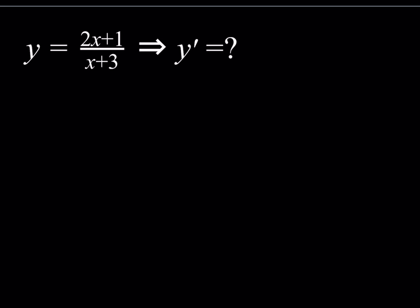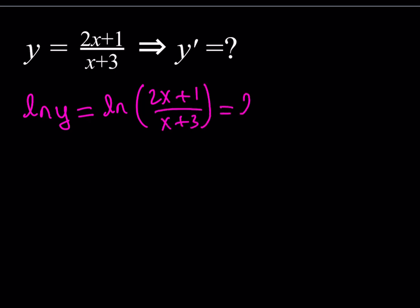Here's what I'm going to do: I'd like to take ln of both sides. Why would I do that? You'll see in a little bit. If you ln both sides, you do have a quotient. As you know, if you ln a quotient, that's going to turn into a difference of ln's. So we can write this as ln of 2x plus 1 minus ln of x plus 3.